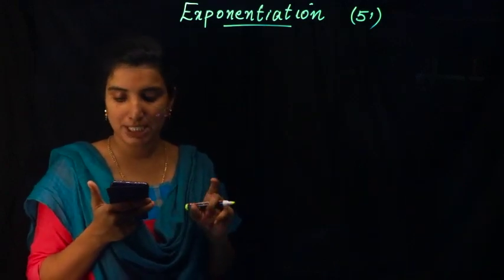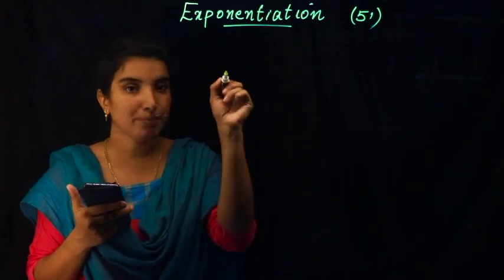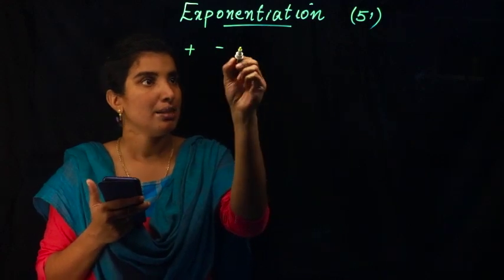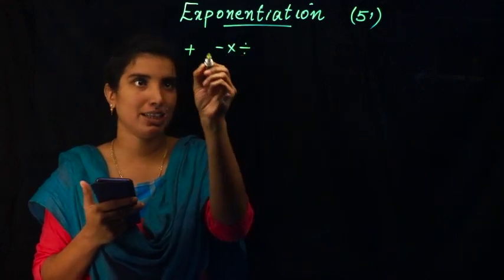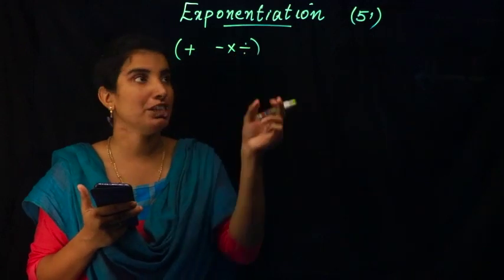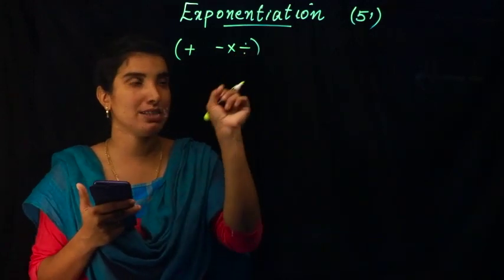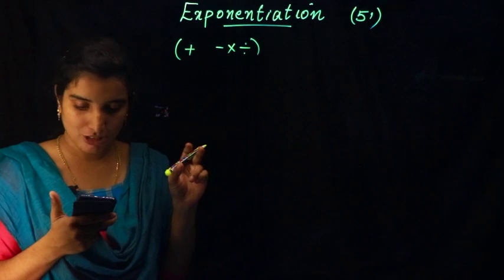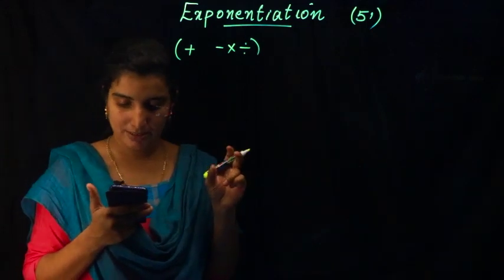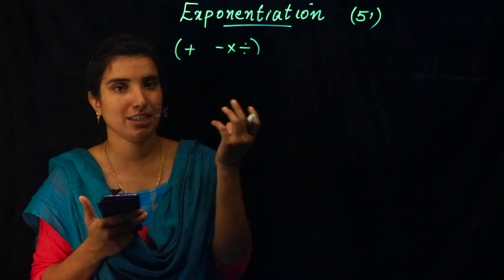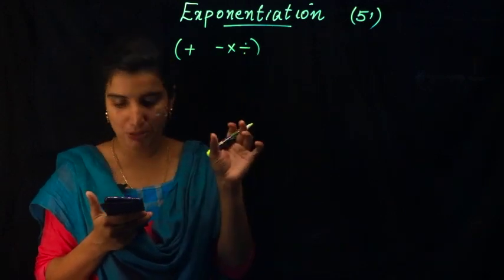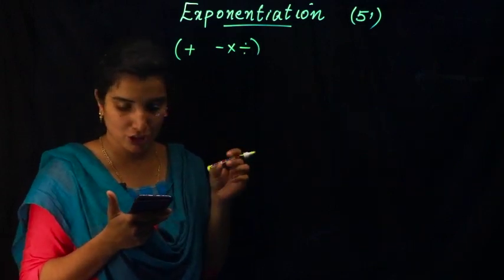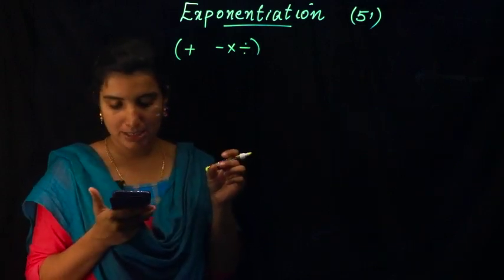The first four operations are indicated by symbols: plus, minus, multiplication, and division. We are going to use four notation symbols. But no such symbol is used to indicate exponentiation. The notation is to write on the upper right of the number the count showing how many times to multiply, in smaller font. For example: